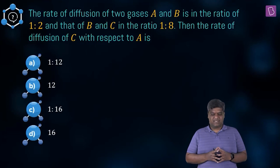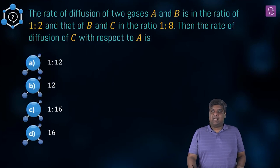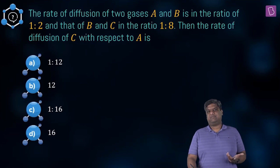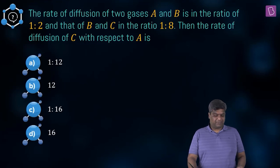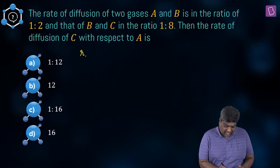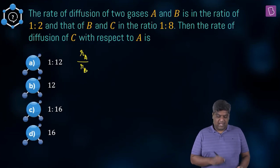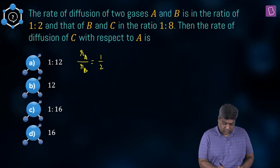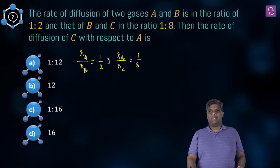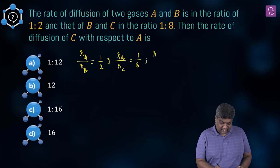The rate of diffusion of two gases A and B is in the ratio 1:2, and that of B and C is in the ratio 1:8. We need to find the rate of diffusion of C with respect to A. Denoting the rate of diffusion as r, we have rA/rB = 1:2 and rB/rC = 1:8, and we want rC/rA.